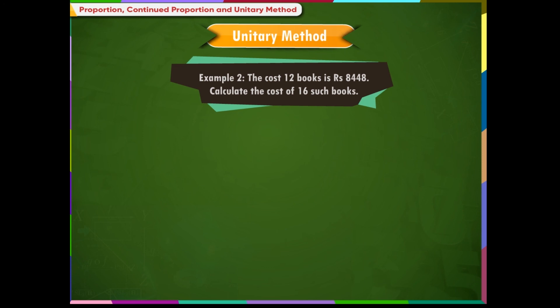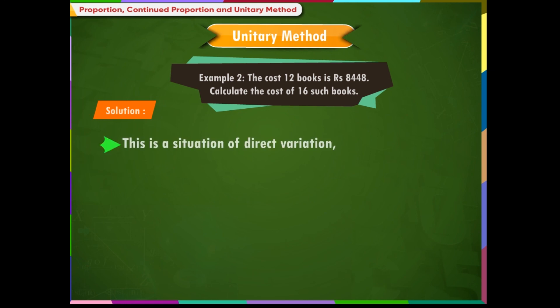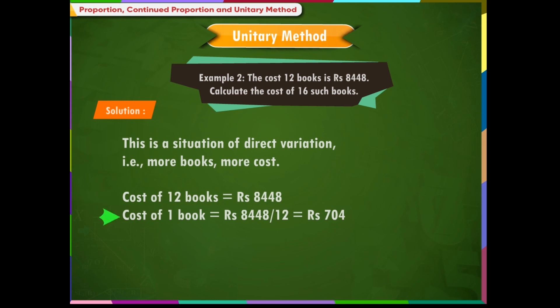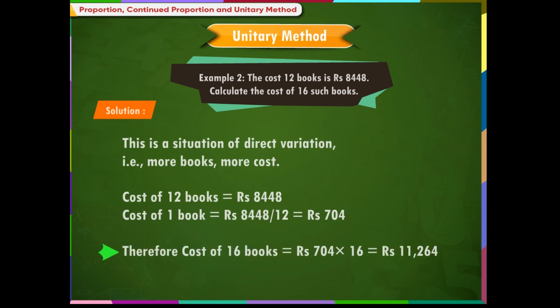Example 2: The cost of 12 books is rupees 8,448. Calculate the cost of 16 such books. Solution: This is a situation of direct variation — more books, more cost. Cost of one book = rupees 8,448 ÷ 12 = rupees 704. Therefore, cost of 16 books = rupees 704 × 16 = rupees 11,264.